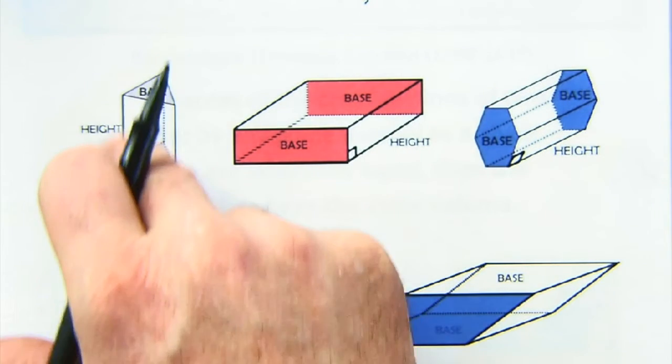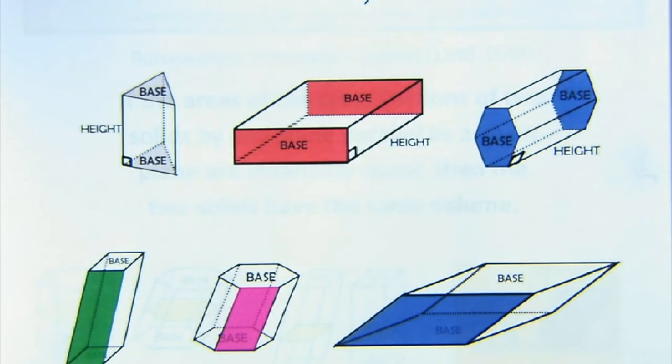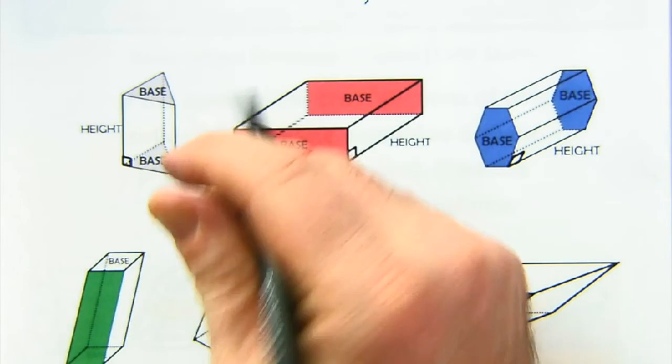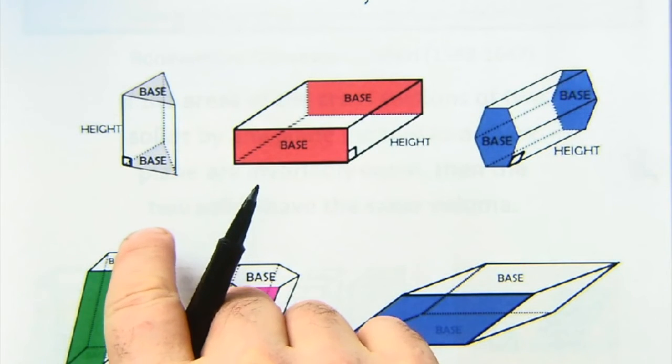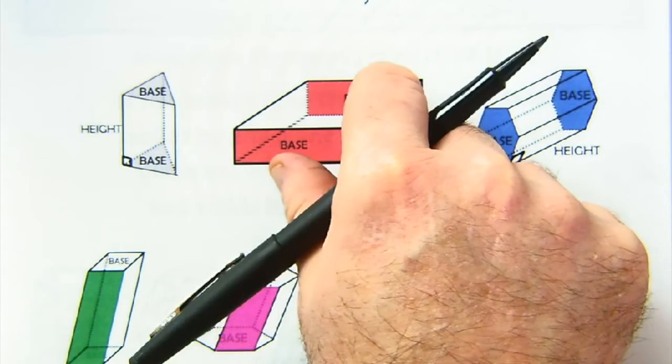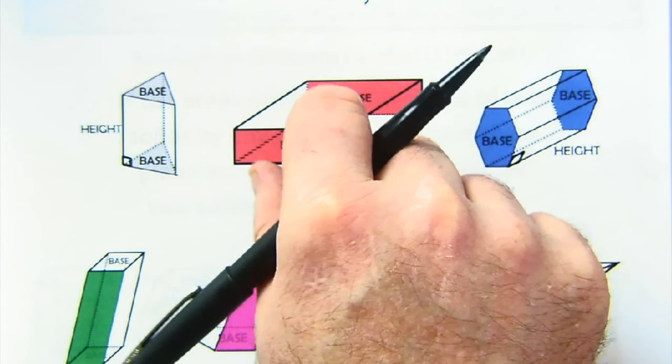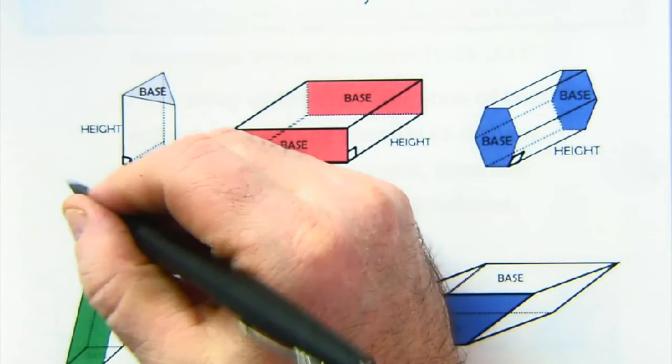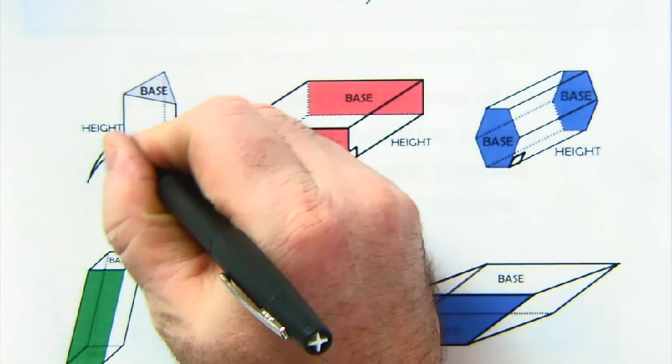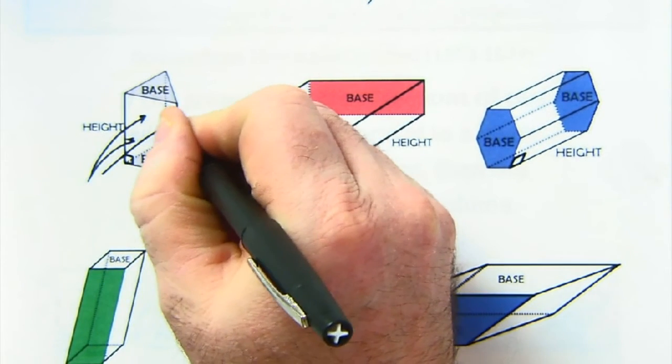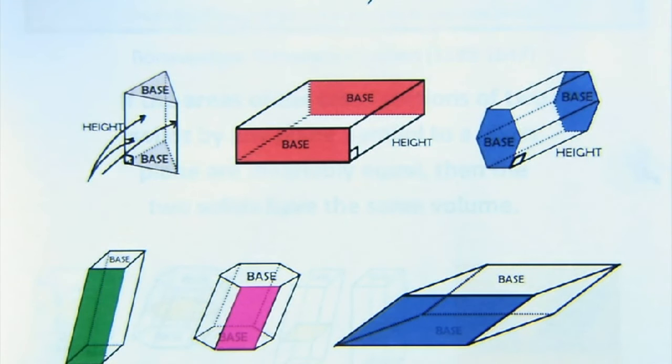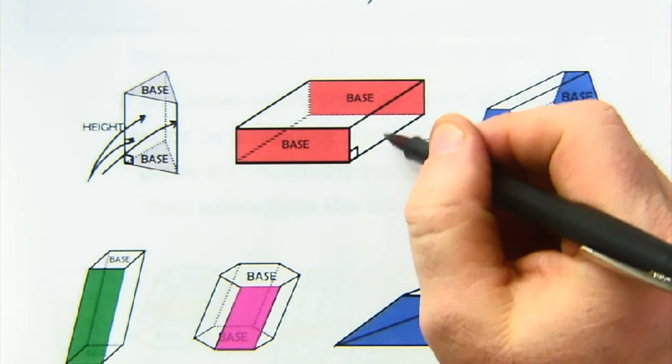And again this idea of bases and heights. These are called right prisms because their base and lateral edges are perpendicular. Let me explain what the lateral edges are. Bases are opposite parallel congruent, and then the other sides, in this case the three other sides, are called the lateral faces.